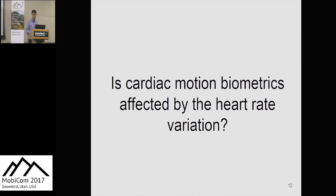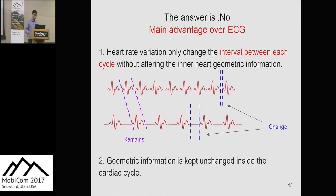Some may wonder whether cardiac motion biometrics is affected by heart rate variation. Our answer is no. This is a main advantage over traditional ECG biometrics, which is significantly affected by body condition and emotional status — for example, after intensive exercise. Heart rate variation only changes the interval between cardiac cycles without altering the inner cardiac geometry information, which remains unchanged within complete cardiac cycles.